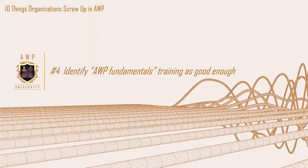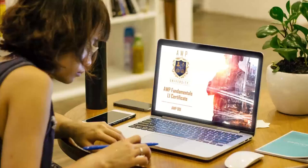Number four: identify AWP fundamentals training as good enough. Proper training for organizations is key. What often happens is we get into the heat of battle, take a basic overview training — a couple of days or four hours of overview with a vendor — and now we understand how to spell AWP. Basic fundamentals gives you the grassroots, but then you need to take it forward and understand more. We live by the crawl, walk, run type basis.